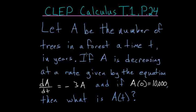Let A be the number of trees in a forest at time t in years. If A is decreasing at a rate given by the equation, the derivative of A with respect to t is equal to minus 3 times the function A, and if A evaluated at a time of 0 is equal to 10,000, then what is the function A of t?